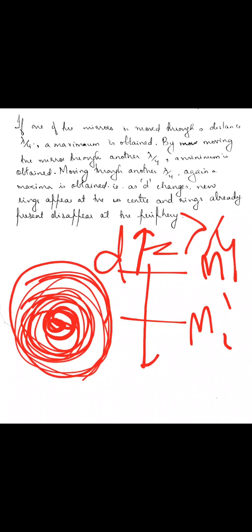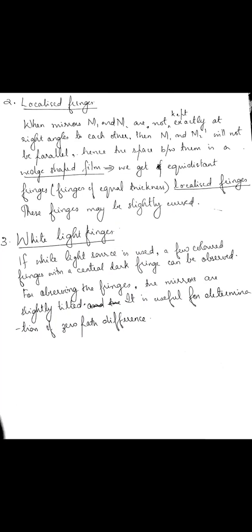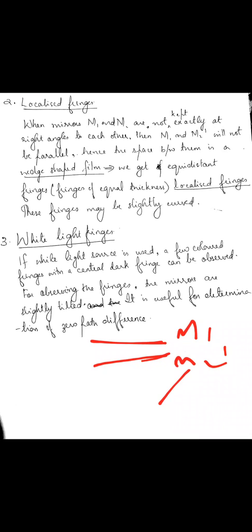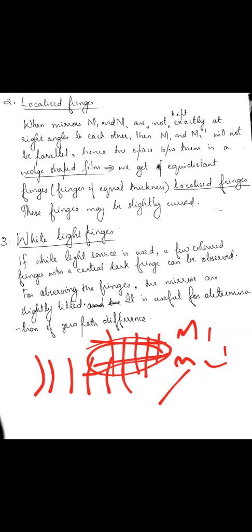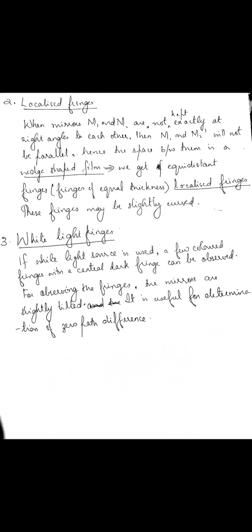The next type is the second type of fringes that you obtain, called localized fringes. If the mirrors M1 and M2 are not exactly parallel, then in the image, M1 and M2 dash will be like this, giving something like a wedge-shaped air film. In a wedge-shaped air film we get equidistant fringes, so here also we get equidistant fringes, but the fringes will be slightly curved. Those are called localized fringes.